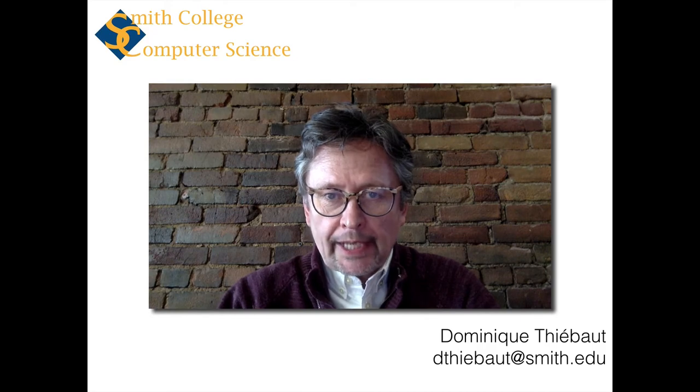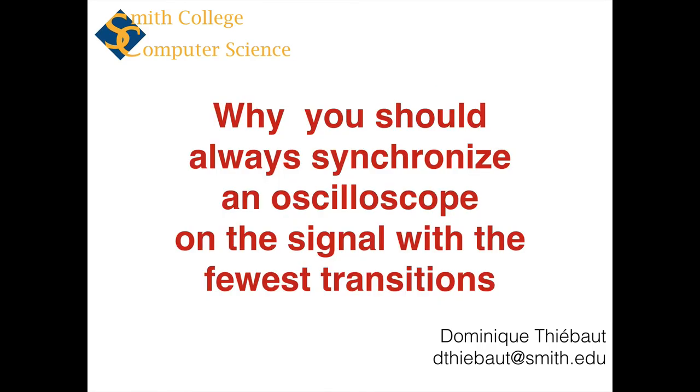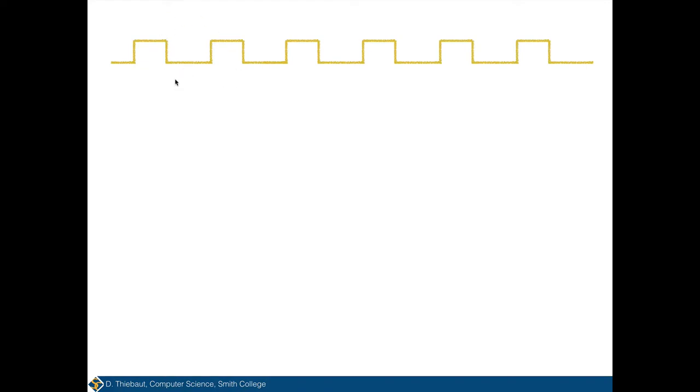Hello. This is a quick video to explain why, when you use an oscilloscope, you want to synchronize the waveforms you're looking at on the signal with the fewest transitions. Let's assume this is an electrical signal you want to measure. It's very regular — the period goes from here to here, and inside a period there is only one transition: low to high.